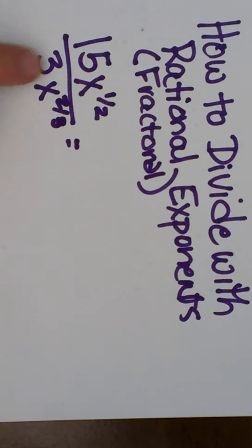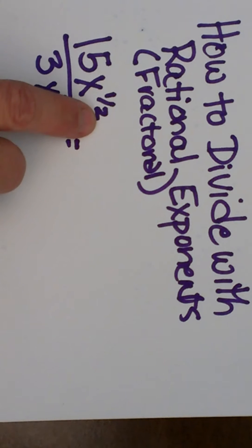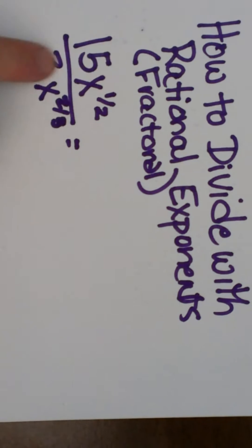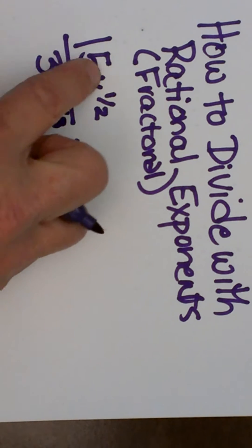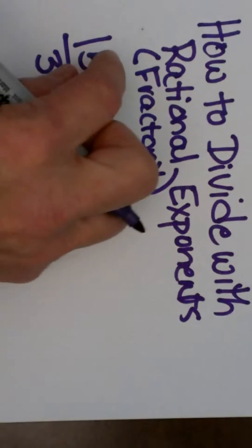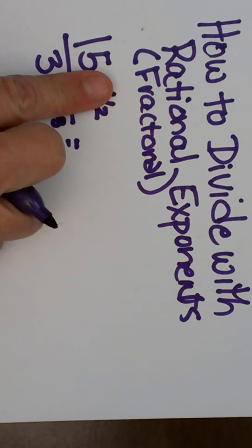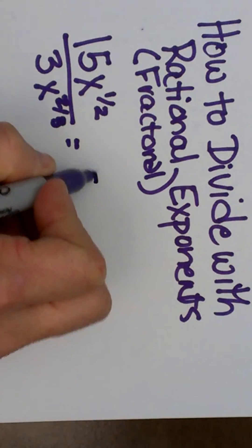So here is our first problem. We have 15x to the 1/2 all divided by 3x to the 2/3. The coefficients on these, the 15 and the 3, they just get a normal automatic operation of division. So that is just going to leave us with 5.